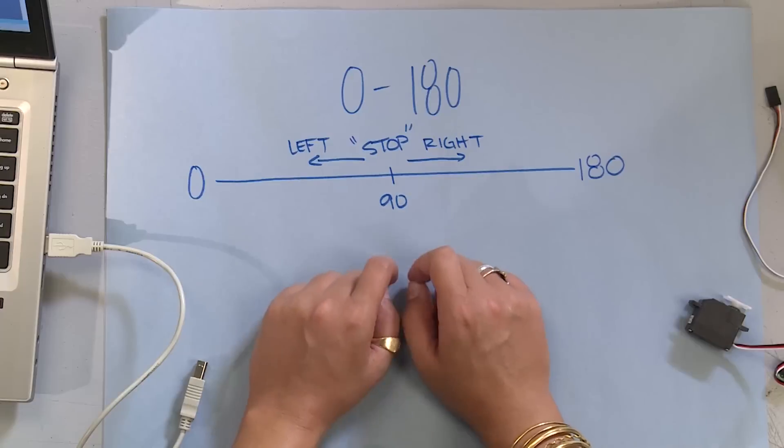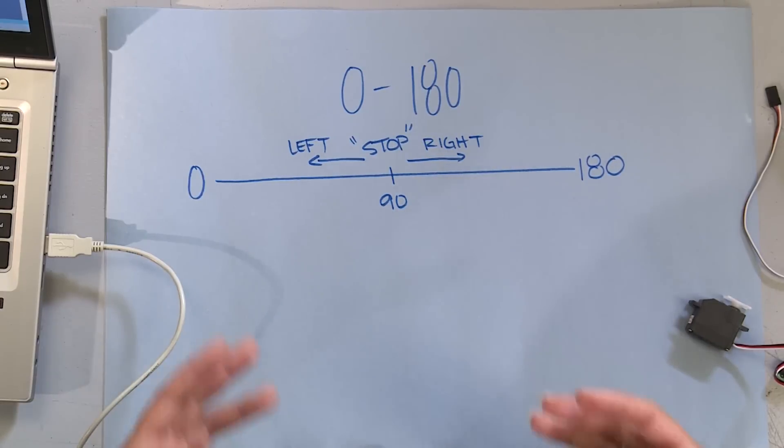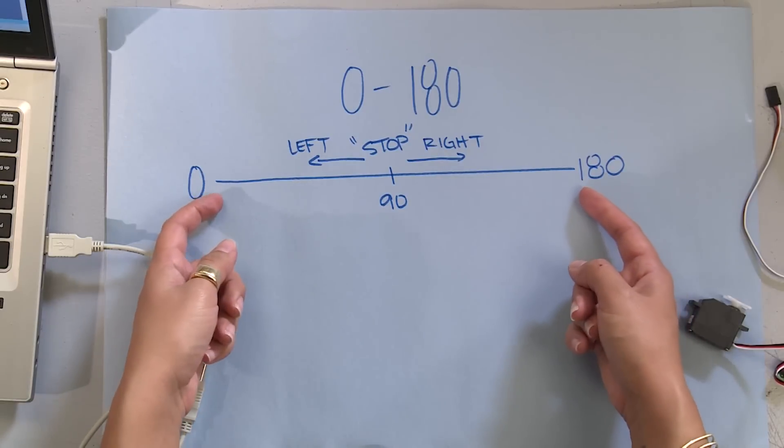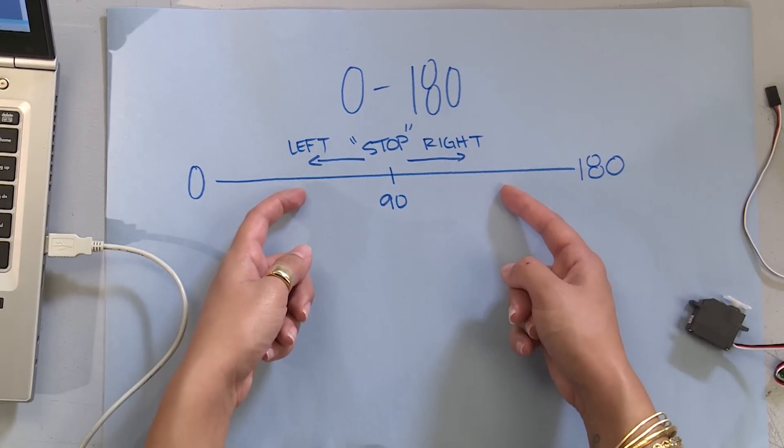If you want the fastest it can go, the only two values you can use are 0 and 180. That'll be as fast as it can go. And if you want to go slower, just get closer to the value of 90.